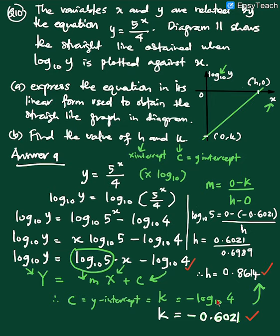And how to find our H, it is actually we can compare with the gradient because we know our gradient now is log base 10 5. So we use the formula M equals to 0 minus K over H minus 0, and I substitute the value and I compare. And lastly I got H is 0.8614. Okay, so this is how to answer for this question. I hope my explanation helps you to understand clearly how to answer this question. Okay, bye. See you next question.